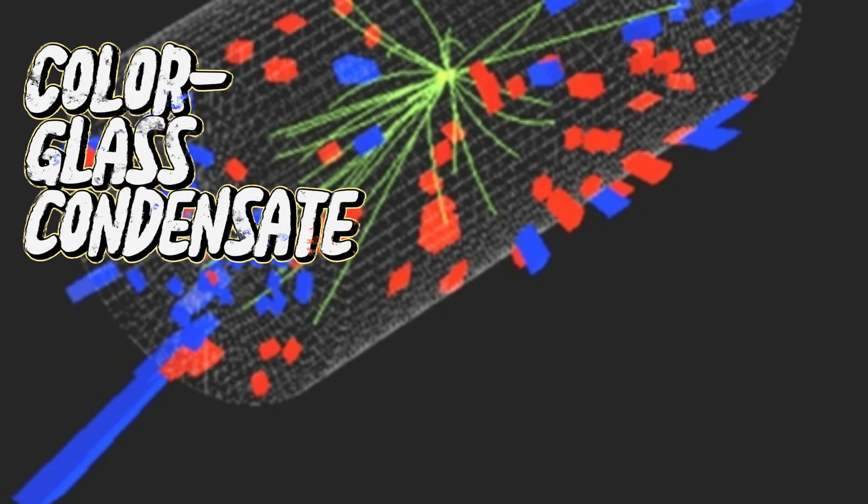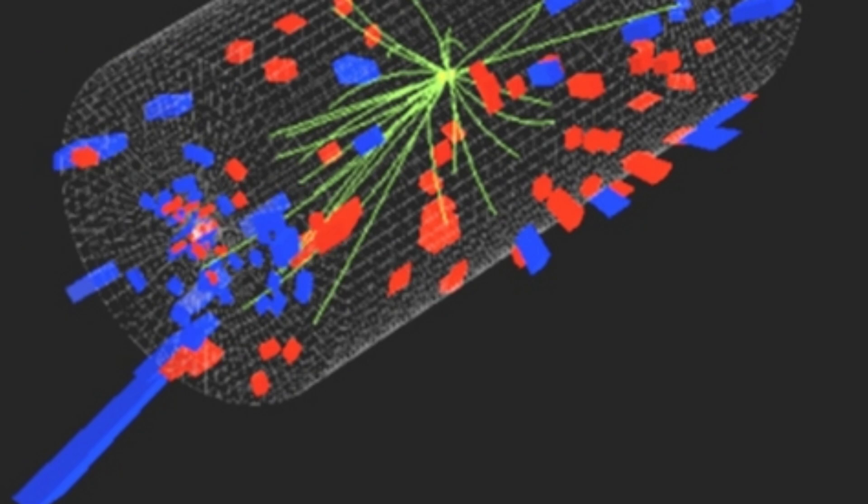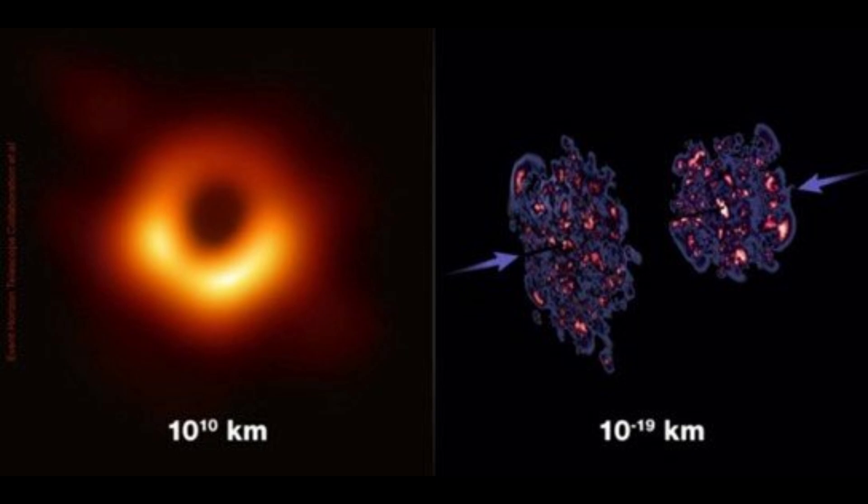Three is color glass condensate. Color glass condensate is a type of matter theorized to exist in atomic nuclei traveling near the speed of light.